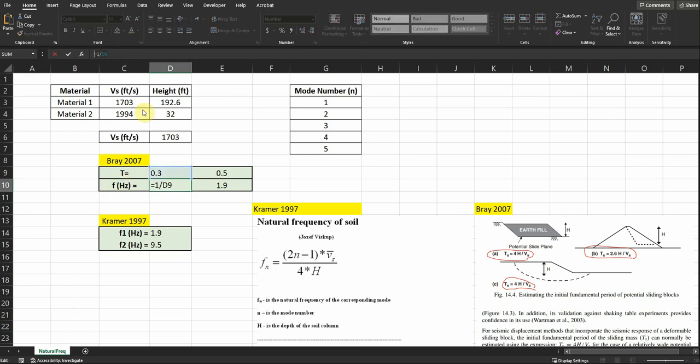In this cell I'm using the equation 4h divided by vs. H in this case is the total height and vs is the average shear wave velocity, which is 1703. Make sure all the units are consistent, so here I'm using height in feet and shear wave velocity is distance divided by time.